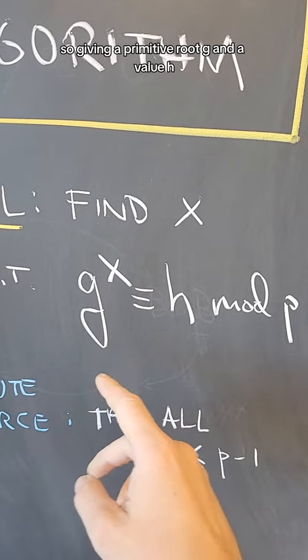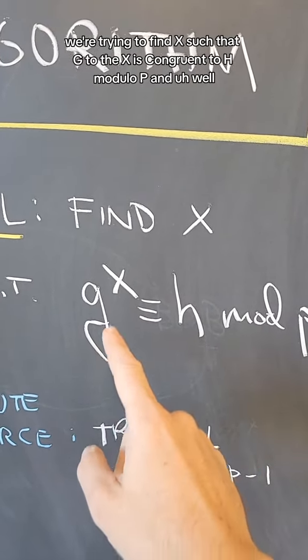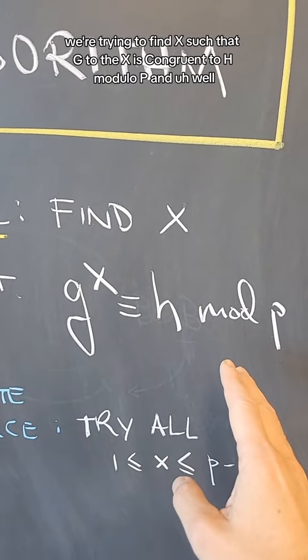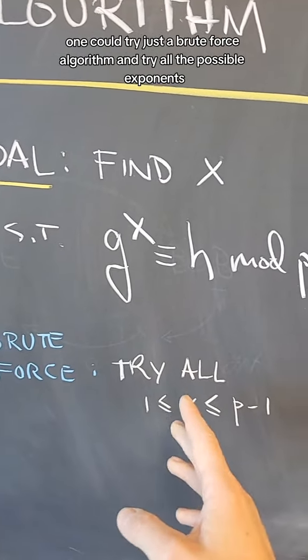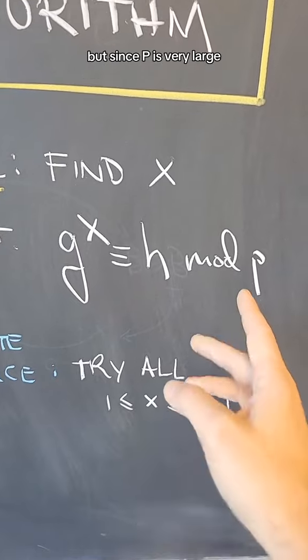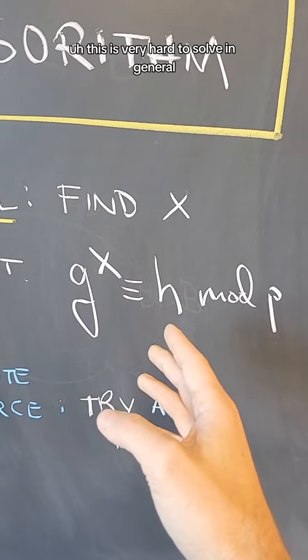Given a primitive root g and a value h, we're trying to find x such that g to the x is congruent to h modulo p. One could try a brute force algorithm and try all the possible exponents, but since p is very large, this is very hard to solve in general.